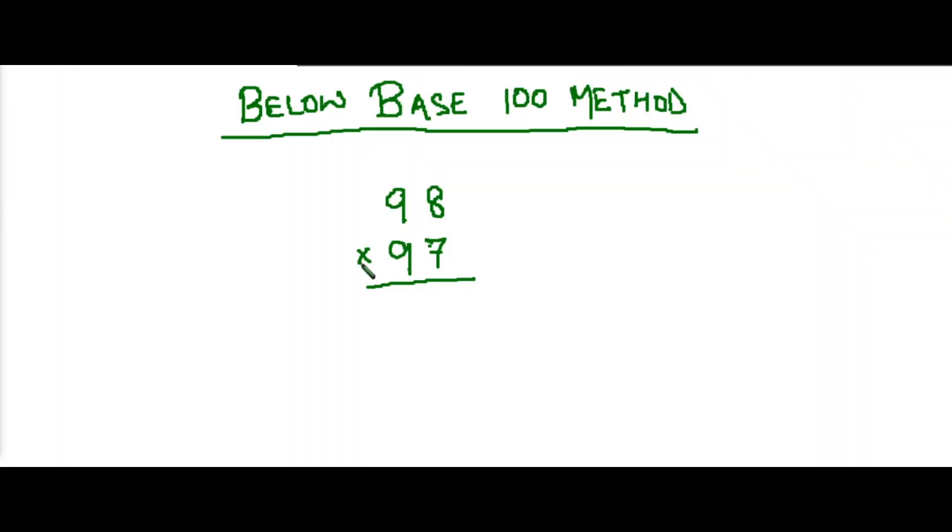Let's begin with our first problem which is 98 multiplied by 97. You can see that these two numbers are nearer to hundred, so here the base is hundred because we are doing below base hundred method.